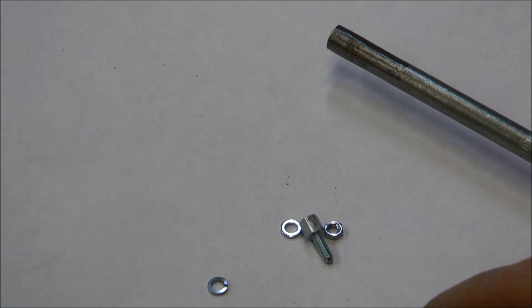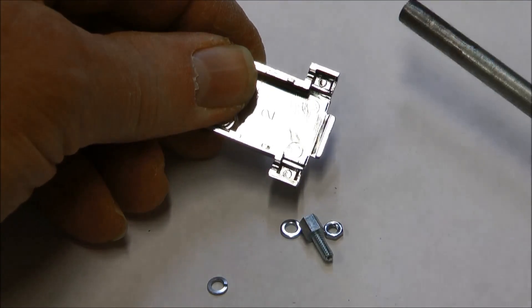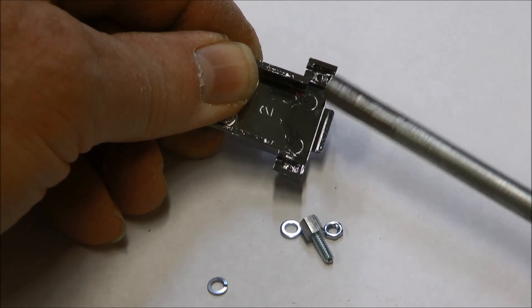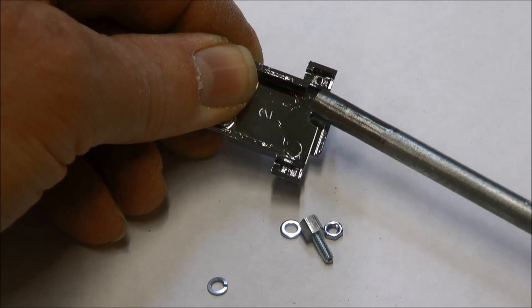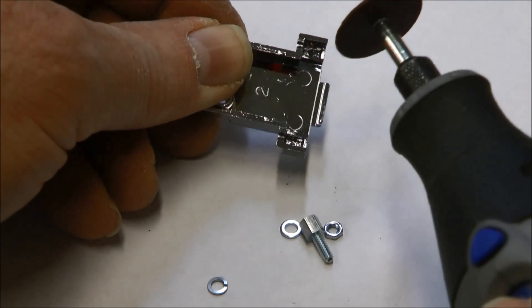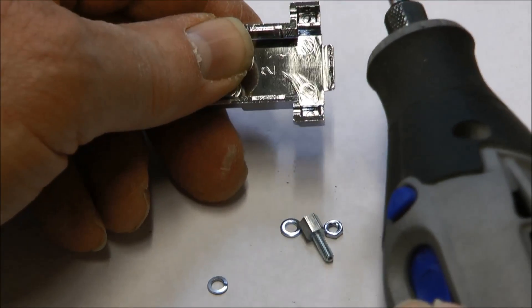Once you have that done, we need to modify the back shell if you're going to use one. With this particular back shell, we need to thin out this thicker area right here and take off some of this area right in here. I use a Dremel tool with a small cutoff wheel to do it here.